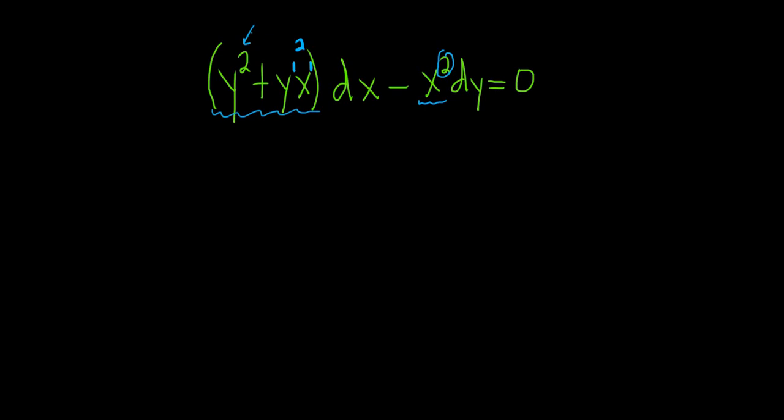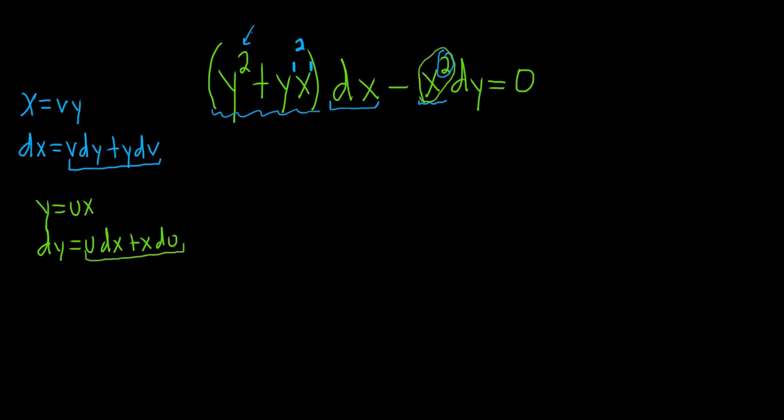So there are two choices to solve this differential equation. Method 1 is to let x equals vy, in which case dx is equal to vdy plus ydv. This would involve taking this dx and replacing it with a dx here, which would mean we have to FOIL. The other option is to let y equals ux, in which case dy is equal to u dx plus xdu. This option is easier because then we only have to multiply by x squared. The dy only gets multiplied by x squared, so you don't have to FOIL. So let's take this approach.